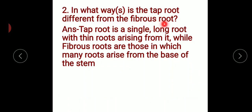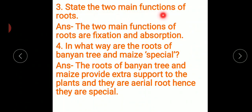In what ways is the tap root different from fibrous root? Tap root is a single long root with thin roots arising from it, while fibrous roots are those in which many roots arise from the base of the stem. The two main functions of roots are fixation and absorption. The roots of banyan tree and maize provide extra support to plants and they are aerial roots — hence they are special. Note all these questions and answers down and learn them.